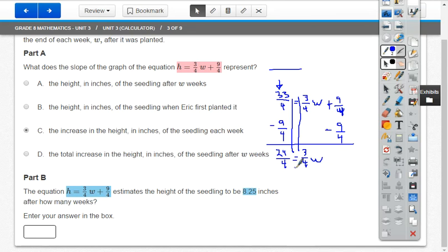So what's the opposite of multiplying by 3-fourths? Dividing by 3-fourths. So when you divide, you end up multiplying by a fraction, you end up multiplying by the reciprocal. So I'm going to multiply everything by 4-thirds. Well, 4-thirds times 3-fourths w is just w.